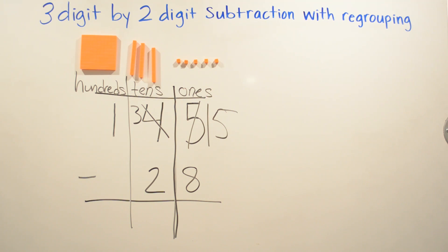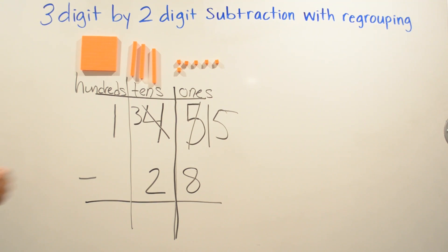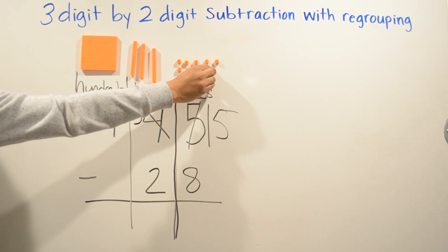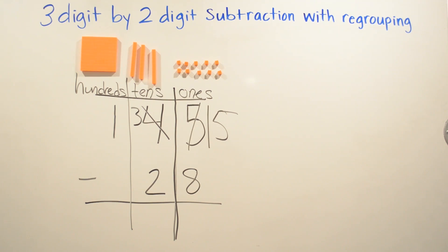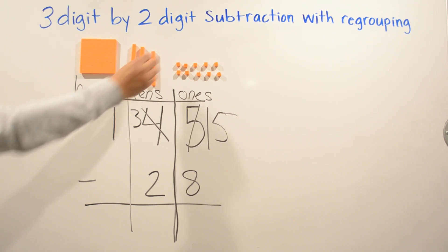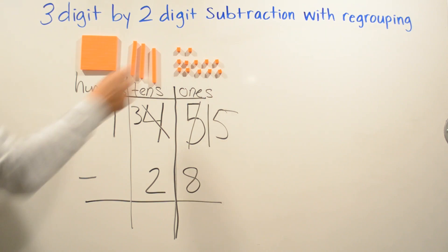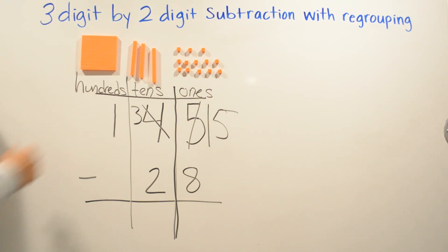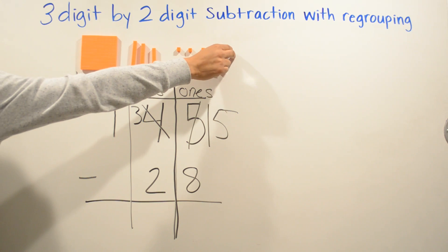So we're going to go ahead and put ten more in the ones column: one, two, three, four, five, six, seven, eight, nine, ten.